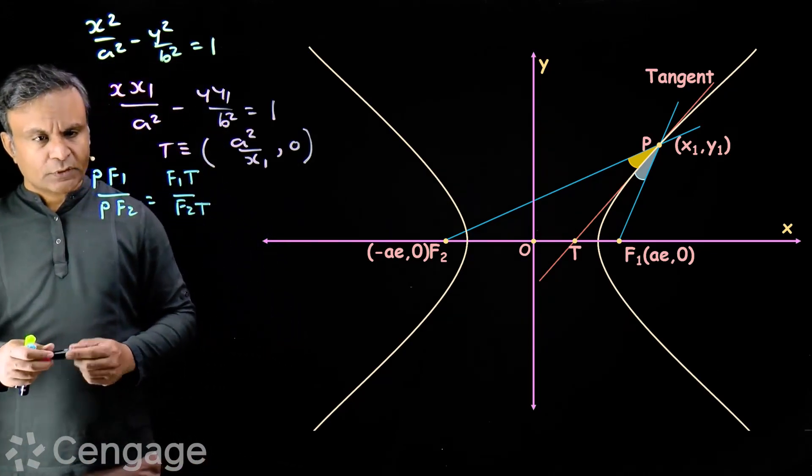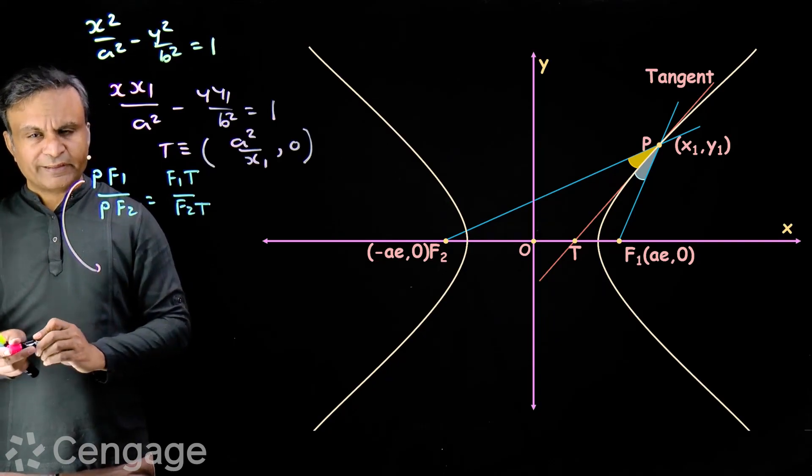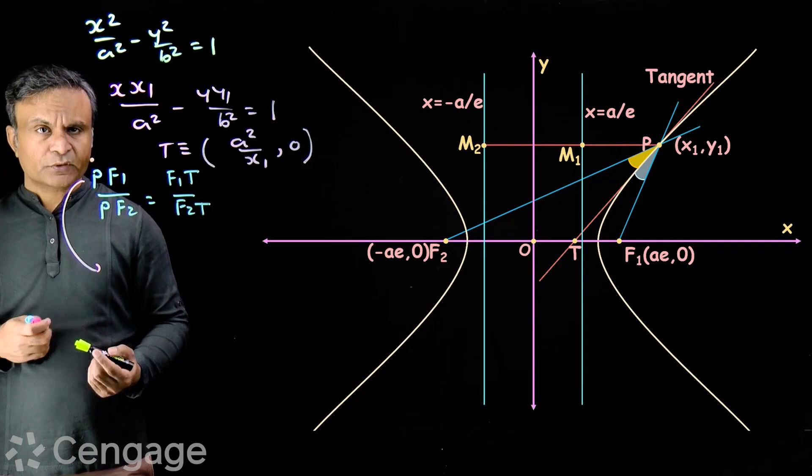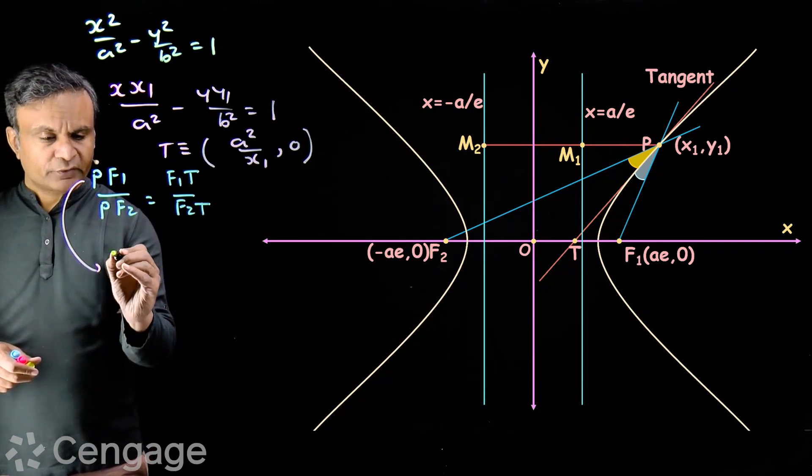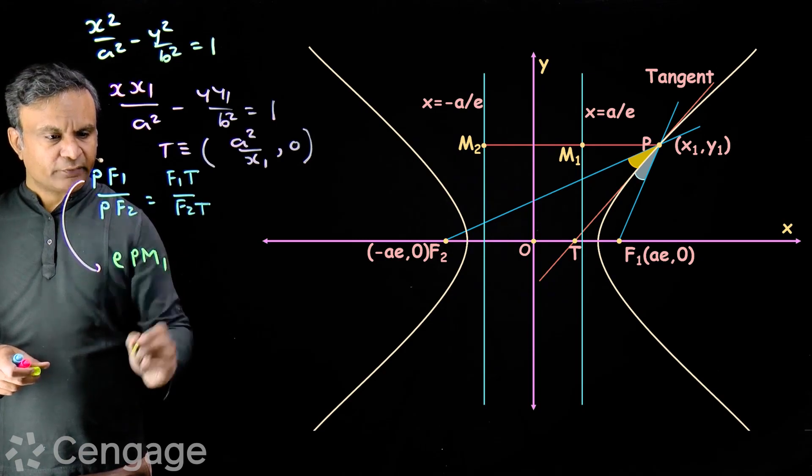What will be PF1? We can use the definition of hyperbola. PF1 will be e multiplied by PM1.